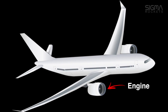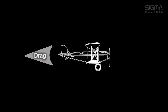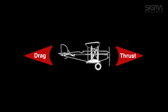Thrust is created by the engines of a plane. The engine may be a propeller pulling the plane or a jet engine pushing the plane forward. Drag is the force that counters thrust. Thrust must be greater than drag in order for the plane to move forward and generate lift.